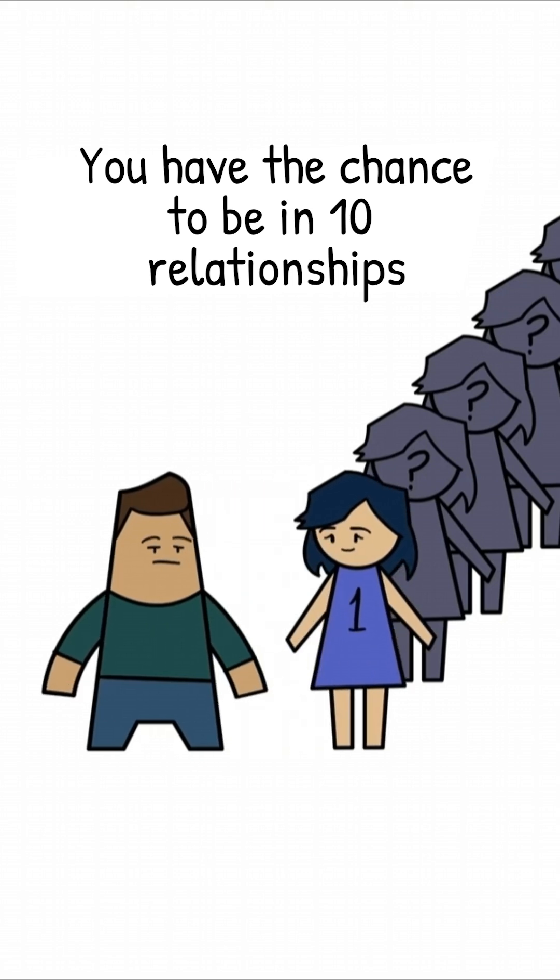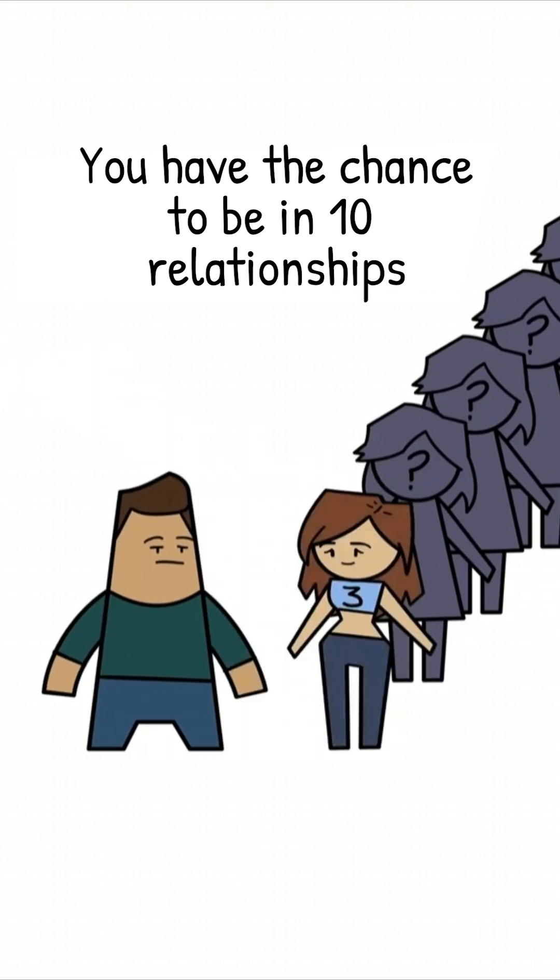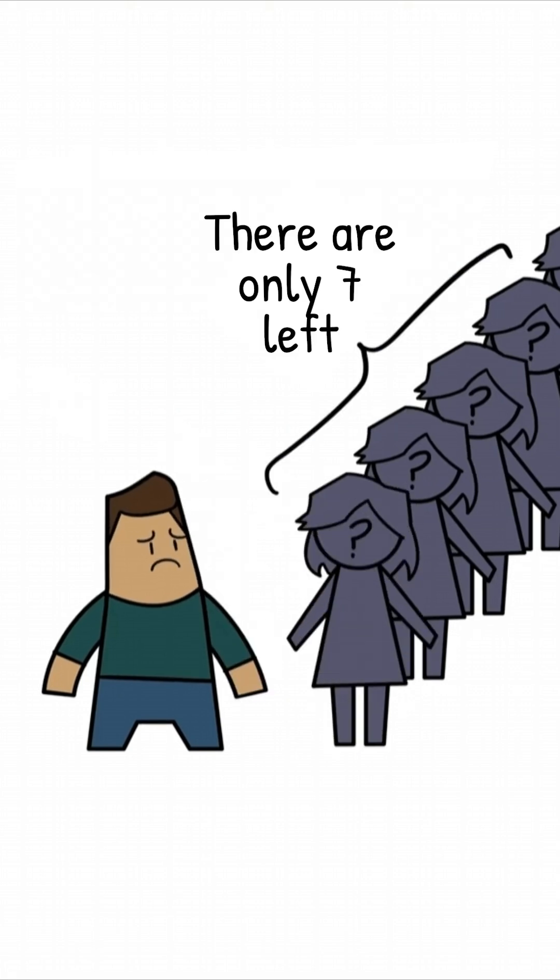You go out with the first one and decide to keep looking. You date the second one and also decide to pass. You go out with the third one and still don't settle. But then you start worrying. There are only seven people left.